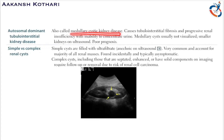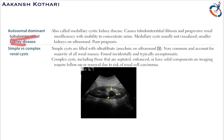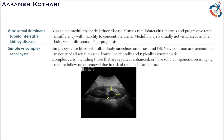Autosomal dominant tubulointerstitial kidney disease — also called medullary cystic disease — causes tubulointerstitial fibrosis. It is also genetically transmitted and may result in progressive renal insufficiency.